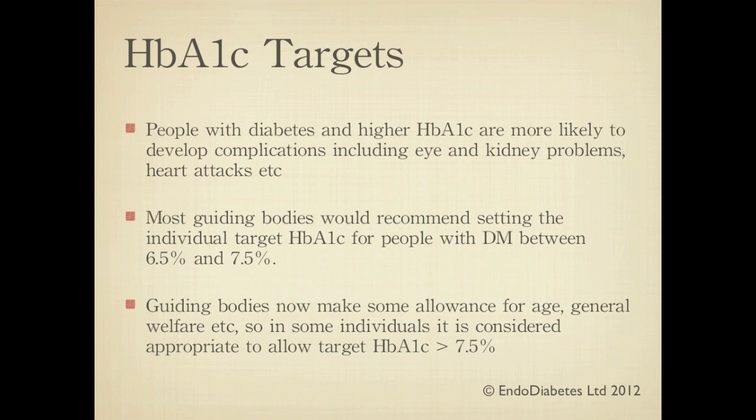People with diabetes and higher HbA1c are more likely to develop complications, including eye and kidney problems, heart attacks, etc. Most guiding bodies recommend setting the individual target HbA1c for people with diabetes between 6.5% and 7.5%. Some allowance is made for age and general welfare, so in some individuals it is considered appropriate to allow the target HbA1c level to be above 7.5%.